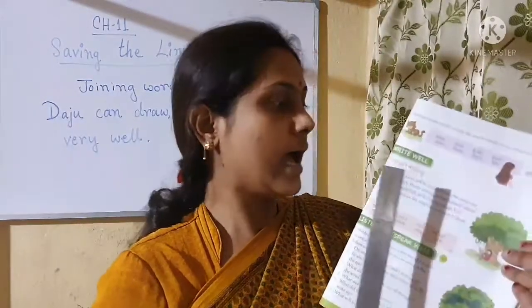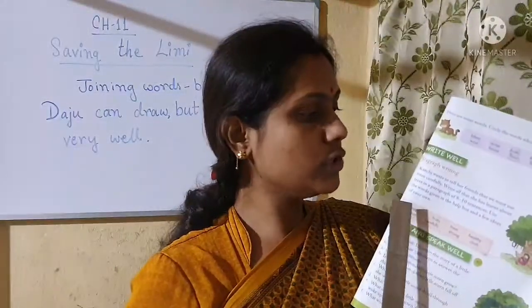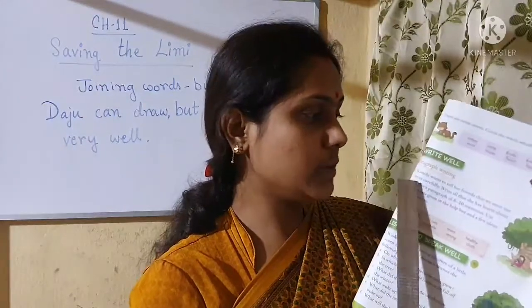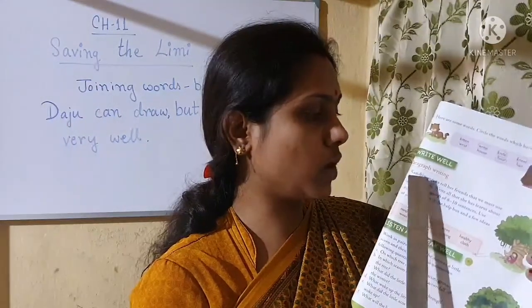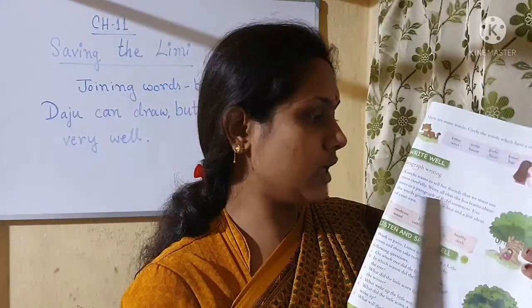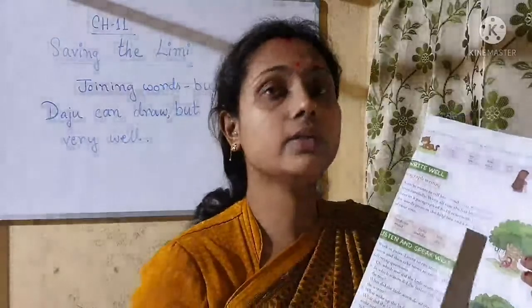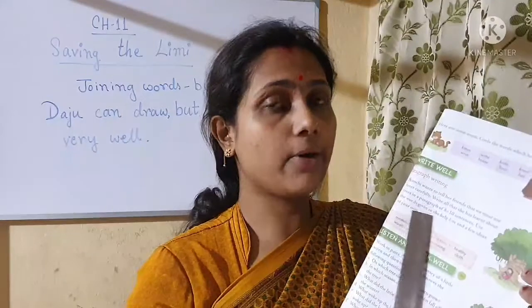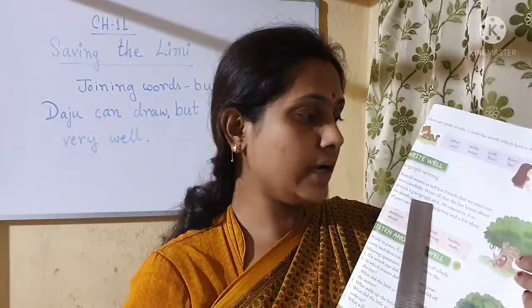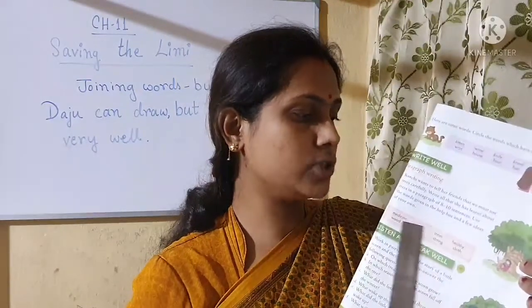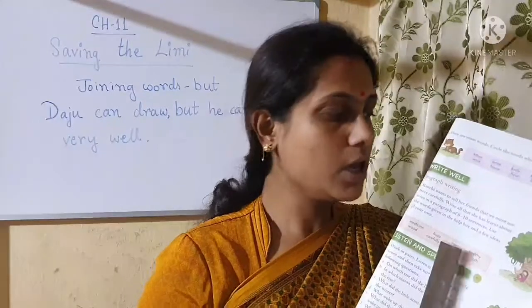So solve up to this. And there is also a paragraph writing task. Kanchi wants to tell her friends that we must use trees carefully. Write all that she has learned about trees in a paragraph of eight to ten sentences. You can take the help of the words given in the box. Do this paragraph writing in your copy.